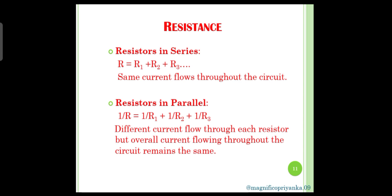Second is insulators — those materials which have very high resistivity and do not allow current to pass through them easily. Example: plastic. Now, there are some materials whose resistivity lies between that of conductors and insulators. They are called alloys. Alloys are made up of one or more than one metal.